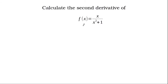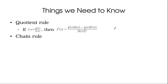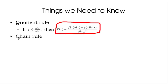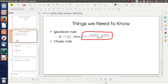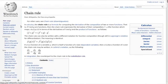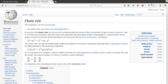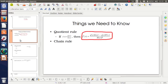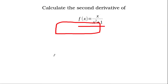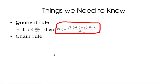The problem is to calculate the second derivative of f(x) = x/(x²+1). First, there are some things we need to know: the quotient rule, which is written right here — please take some time to memorize this — and the chain rule, which is a bit more complicated. There's a Wikipedia article or textbook you should definitely look at, as both rules become really helpful.